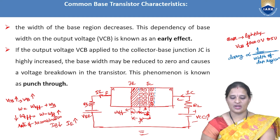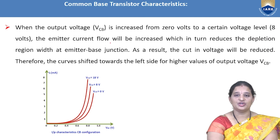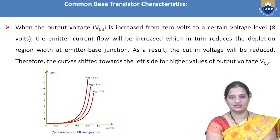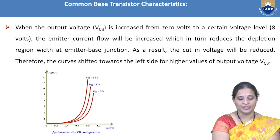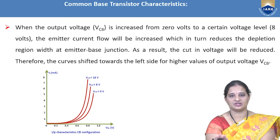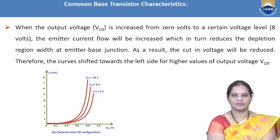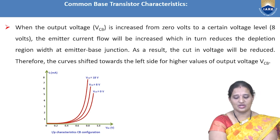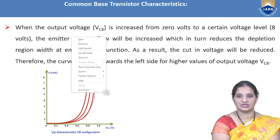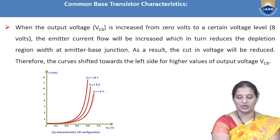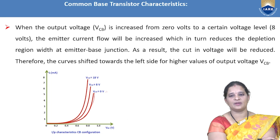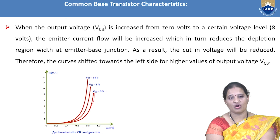Due to the early effect, as IE increases, the current starts increasing with less applied voltage, so the input characteristic curve shifts towards the origin (to the left). When VCB is increased from 0 to higher values, the curves shift toward the left/origin. This shift in the input characteristics curve is the observable effect of the early effect in common base configuration.